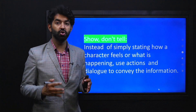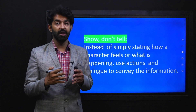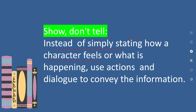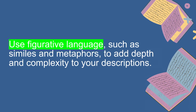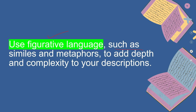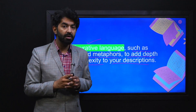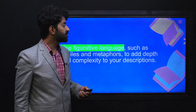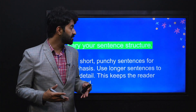Another rule is show, don't tell — you have to show the reader what is actually happening instead of just telling facts. Instead of simply stating how a character feels or what is happening, use actions and dialogue to convey the information. When there are actions and dialogues, the reader feels they are actually witnessing the scene. Also, use figurative language such as similes and metaphors to add depth and complexity to your descriptions.